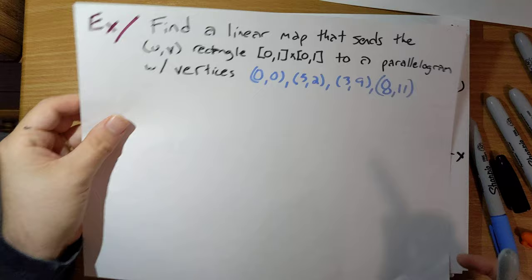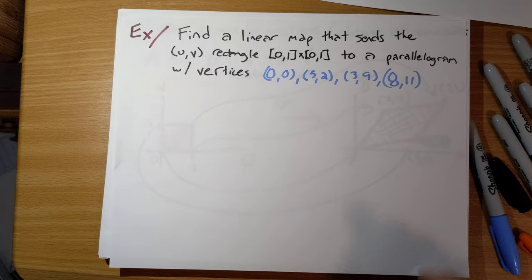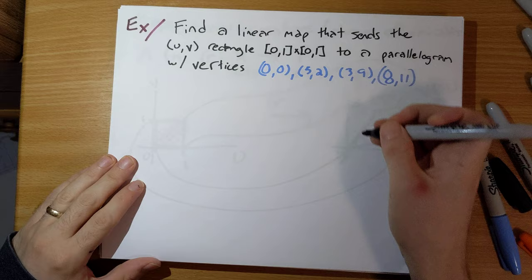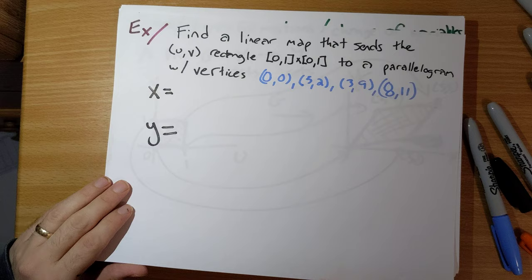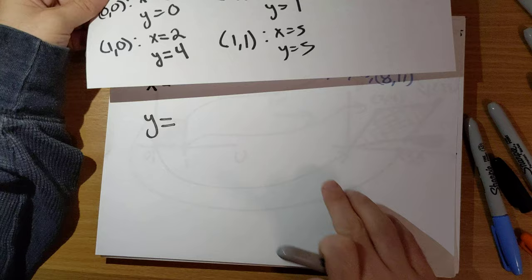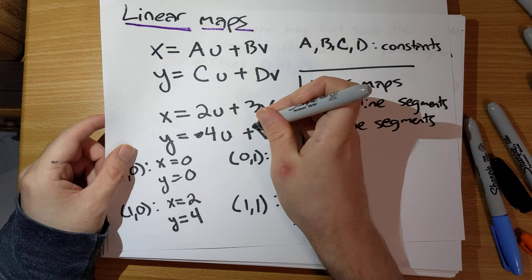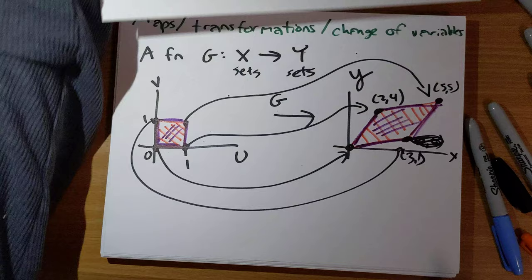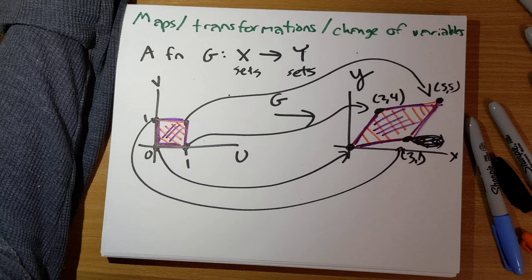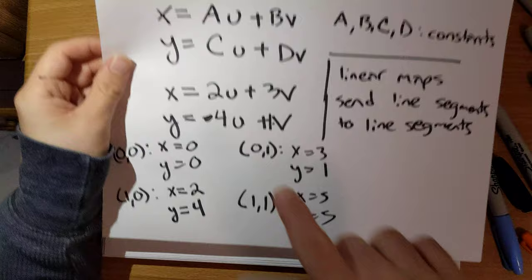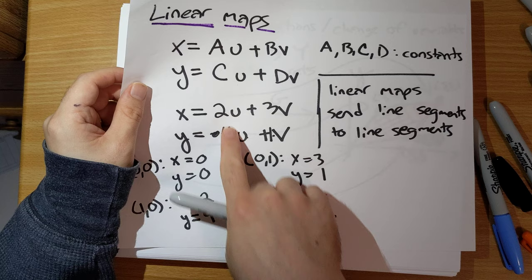One important skill with linear maps is being able to find a linear map that sends a UV rectangle to a parallelogram with a given set of vertices. We reverse-engineer it: the coefficients 2 and 4 on u in x and y come from the coordinates of one vertex, while 3 and 1 are the coefficients on v, corresponding to another vertex of the parallelogram.